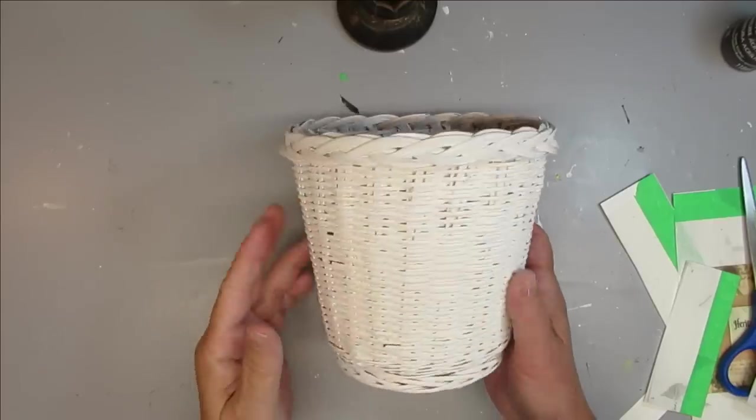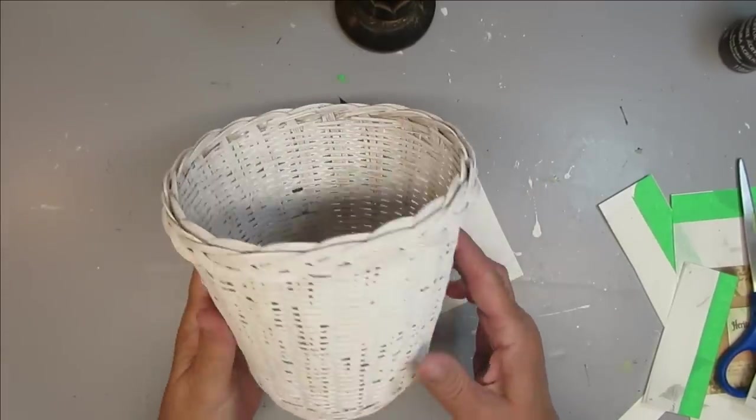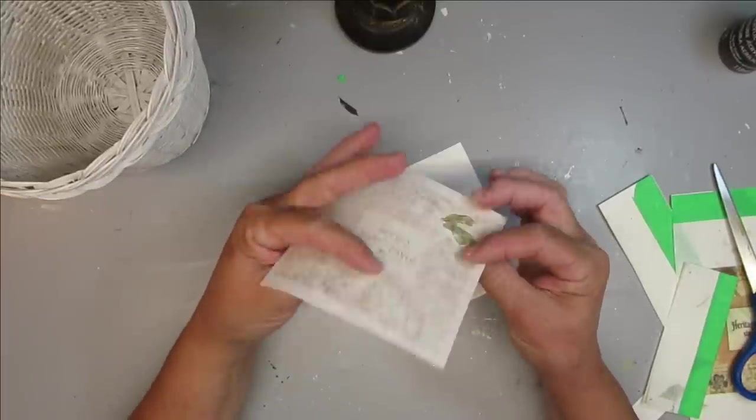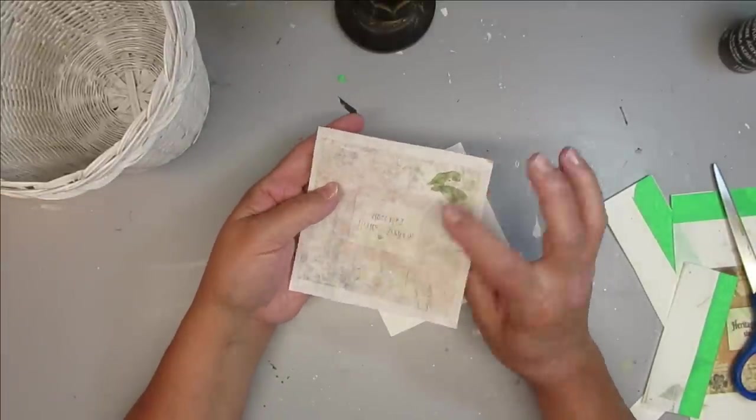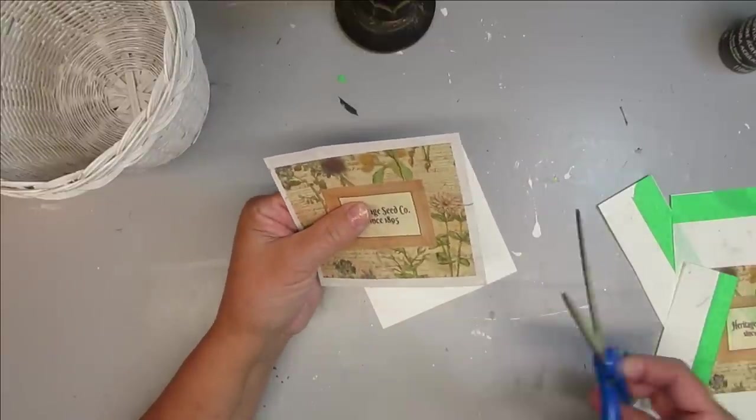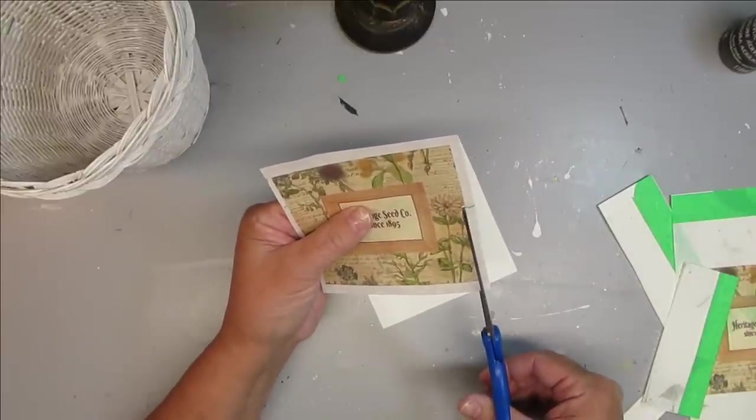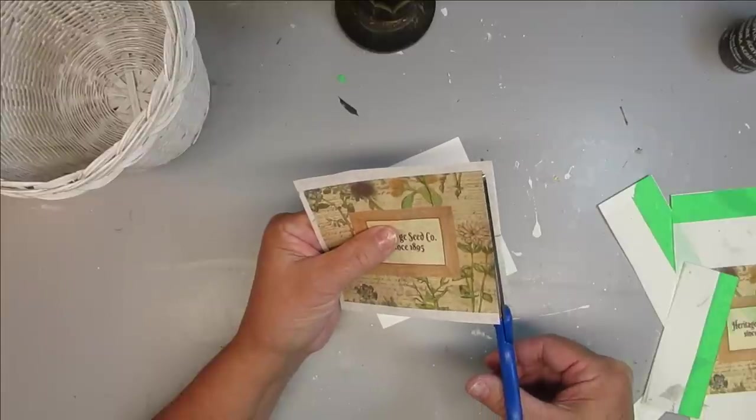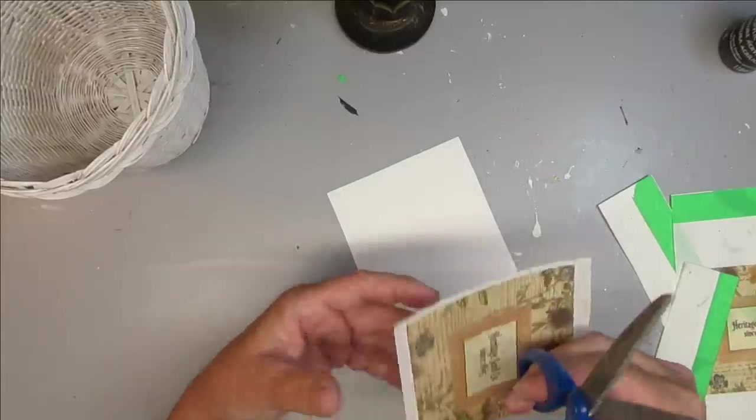This basket was a thrift store find. It was that regular honey brown kind of gold color. I gave it a couple of coats of white spray paint inside and out. Then I created this little label and I printed this off on rice paper. I'm going to trim it right up close to the label edge and then I'm going to use Mod Podge to apply it to the basket.